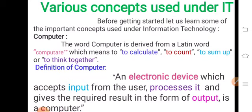After discussion of the need of information, let us discuss some concepts related to IT — various concepts used under IT. Before getting started, let us learn some of the important concepts used under information technology. Information technology involves the concepts of data, information, and ICT. The word 'computer' is derived from a Latin word 'computare' which means to calculate, to count, to sum up, or to think together.